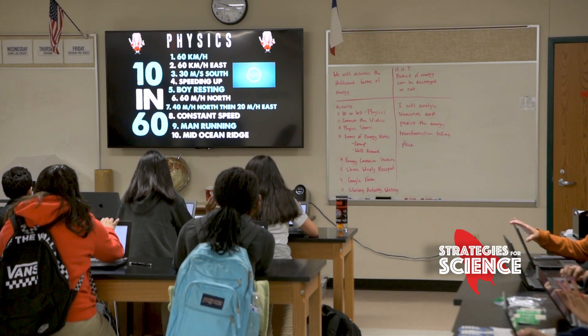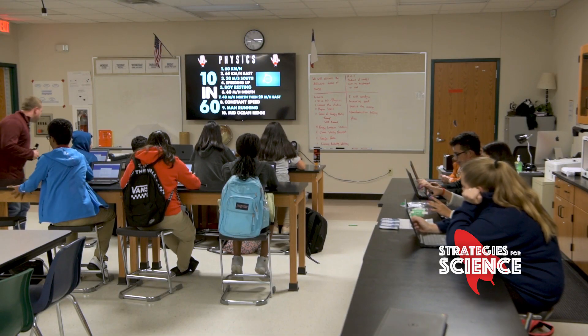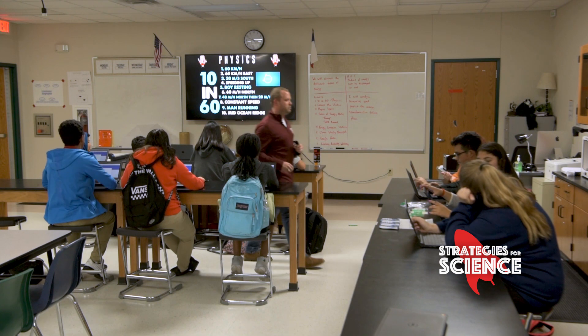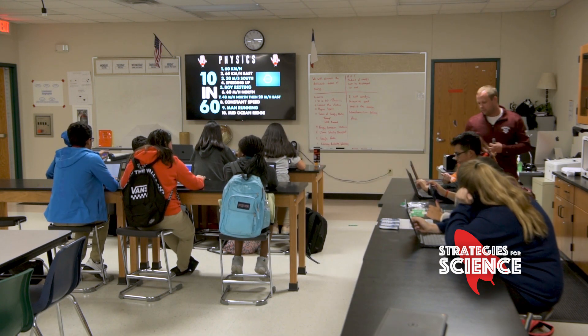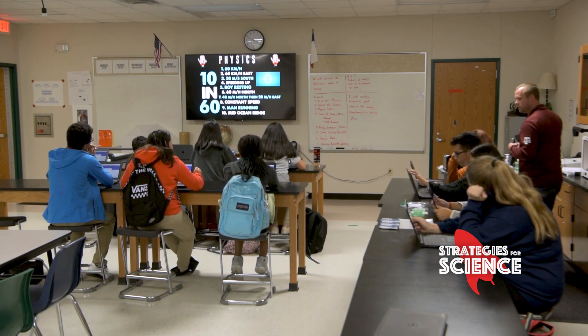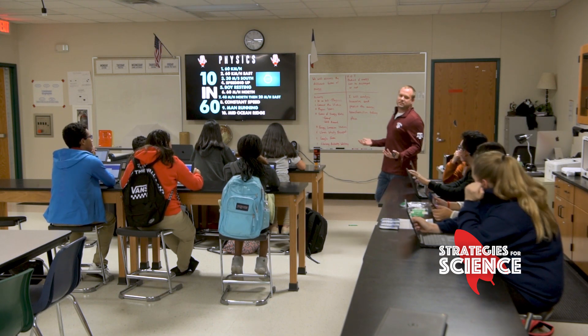So one of the strategies that I use in my classroom is called '10 in 60.' The way I use this is right at the beginning of class, I'll have 10 questions on the screen and a Google form that goes along with it. These 10 questions aren't overly complicated — they're actually kind of low-hanging fruit that I want my kids to master. Maybe vocabulary words, or speed, velocity, or acceleration, or descriptions of protons, neutrons, or electrons — things that they can get really quick. They see the same 10 questions every single day.